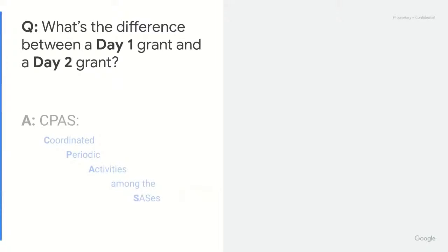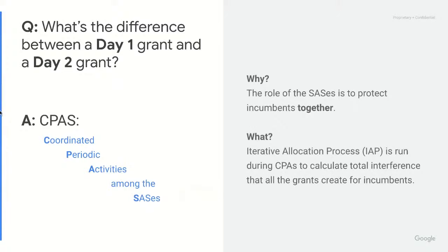The answer to this question is CPAS. What is CPAS? CPAS stands for Coordinated Periodic Activities Among the SASSes. Every night, all the SASSes exchange information about their CBSDs and their grants. They also check for updated incumbent information, and last but not least, the SASSes will calculate the total interference created by the grants on the incumbents.